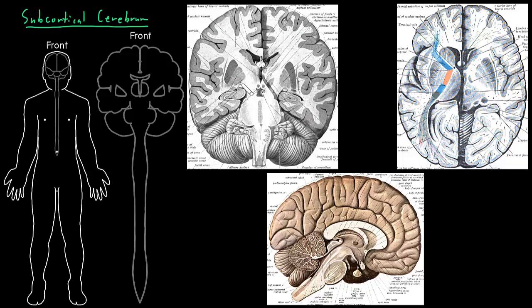These deep structures, like this deep white matter and these deep gray matter nuclei, we call subcortical because they're deep to the cerebral cortex — beneath the cerebral cortex. I've got three very nice illustrations here to point out some of the structures that are subcortical structures of the cerebrum.